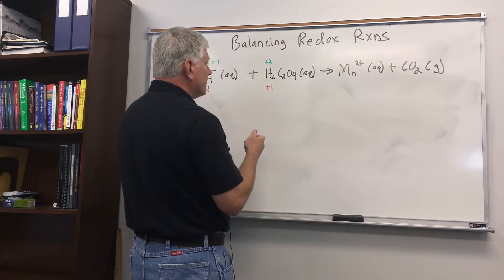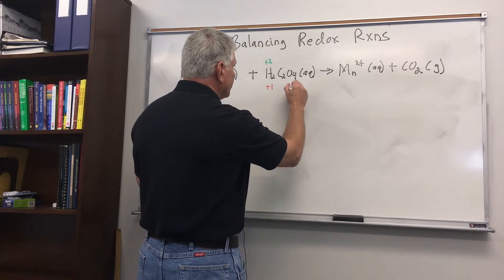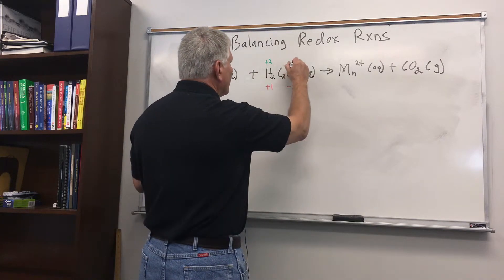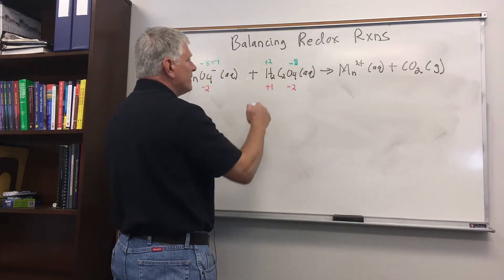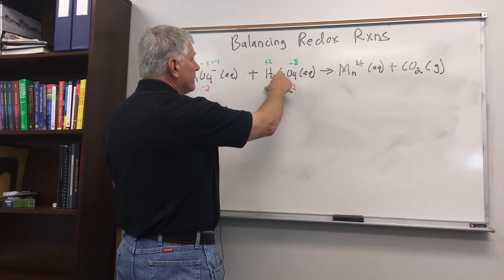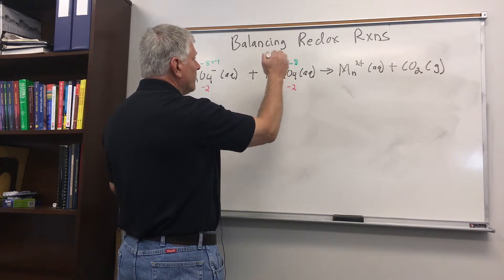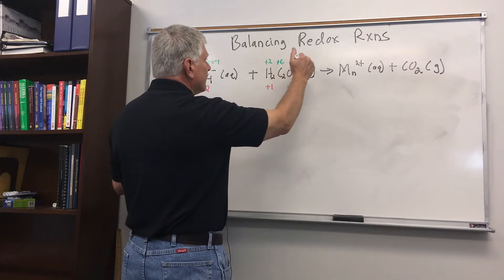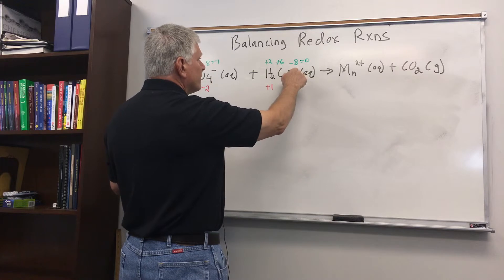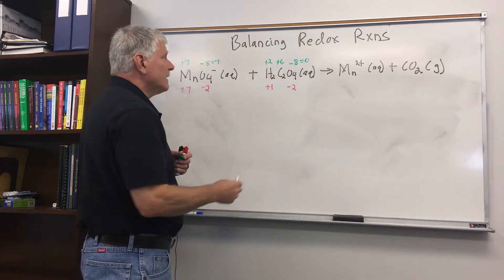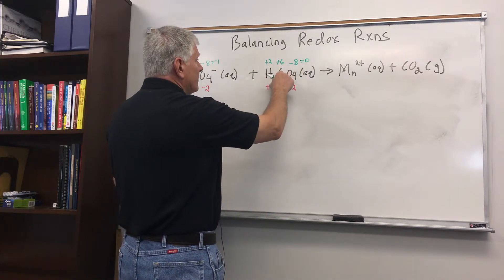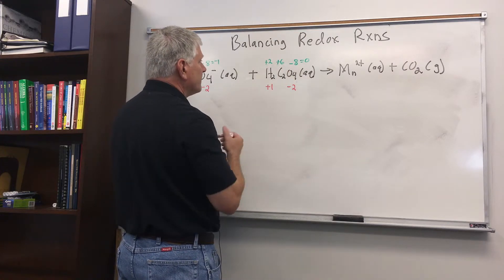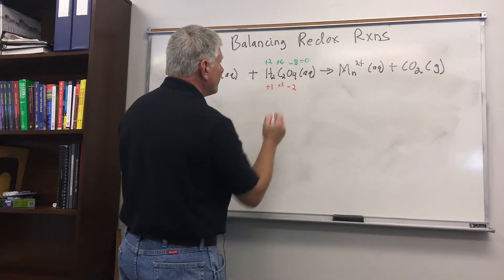Then we assign oxygen next. Oxygen is negative 2 and we have 4 oxygens, giving a total of minus 8. That means carbons will have to have a total of plus 6, since plus 8 minus 8 equals 0 and the charge on the molecule is 0. We have two carbons, so since the total is plus 6, each carbon has to be plus 3.